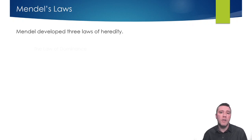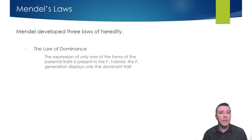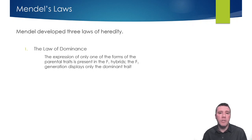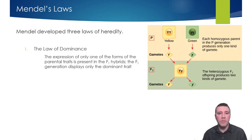The first of Mendel's laws is called the Law of Dominance. It states that given two different alleles in a diploid organism, only the dominant allele plays a role in the organism's resultant characteristics. Mendel found this to be true because the offspring of true breeding parents would display the trait of only one of the parents — the one with the dominant characteristic — 100% of the time.